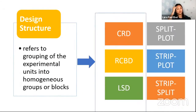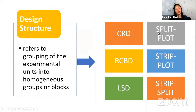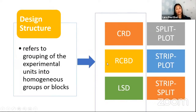The design structure refers to the grouping of experimental units into homogeneous groups or blocks. This is where you see structures like CRD, RCBD, and LSD. There are also other structures like split plot and strip plot. Note that split plot can be combined with CRD or RCBD, and strip plot with RCBD. We will focus on the first three basic design structures, which also apply when working with more complicated designs like split plot.